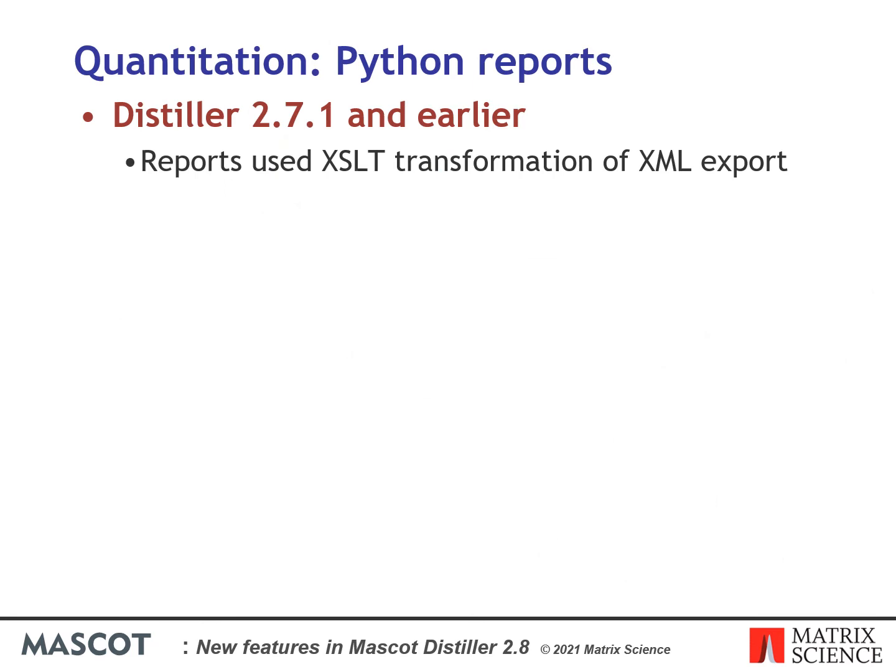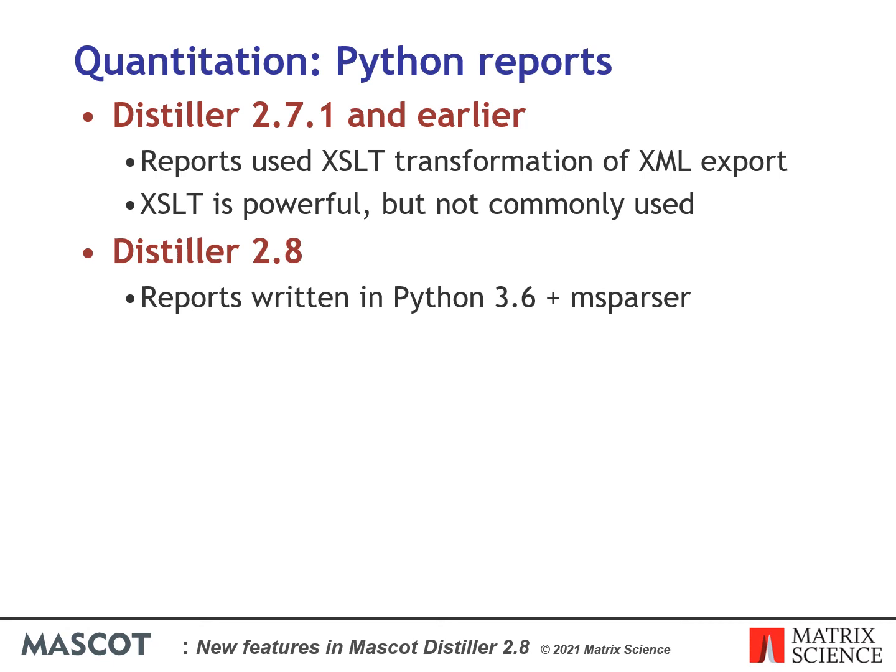In Mascot Distiller 2.7 and earlier, reporting of quantitation results was handled using XSLT transformation of the XML export of the quantitation results. XSLT is a powerful language but it's not commonly used, and you'd probably struggle to find someone in the lab familiar enough with it to write custom reports. In Mascot Distiller 2.8, reports are written in Python 3.6 and use msparser to access the search and quantitation results, providing simple access to those results.